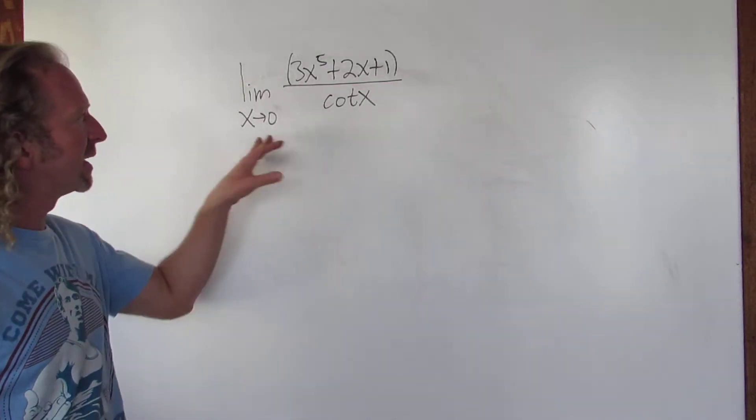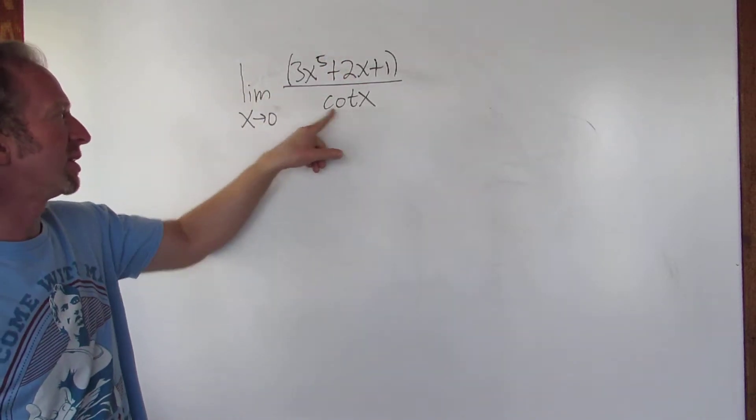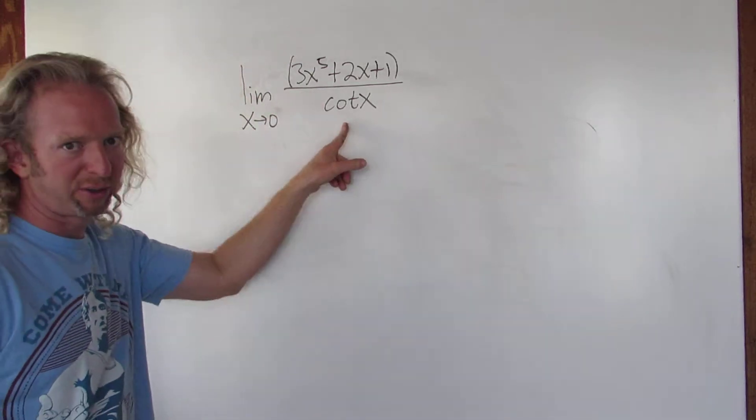This problem we have to compute a limit as x approaches 0. So we have a polynomial over cotangent. So if you plug in 0, cotangent of 0 is not going to work.